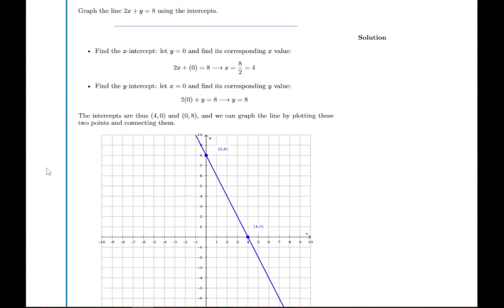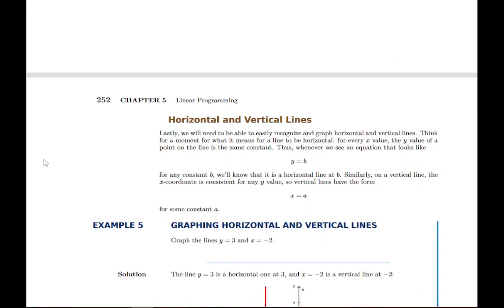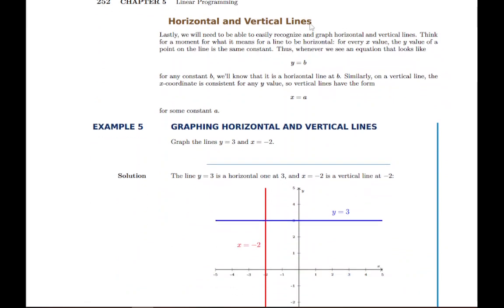There's another example of that same process again. Then the section finishes with a quick description of horizontal and vertical lines, which are also going to be important at the end of this chapter when we talk about linear programming. We'll need to be able to draw horizontal and vertical lines, and it's just a matter of recognizing that a horizontal line looks like y equals some number and a vertical line looks like x equals some number.